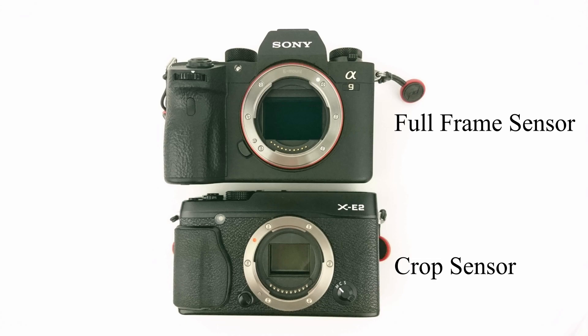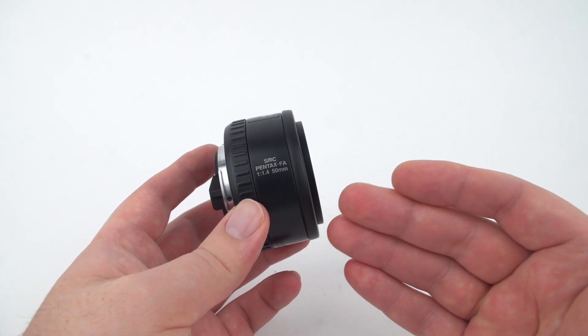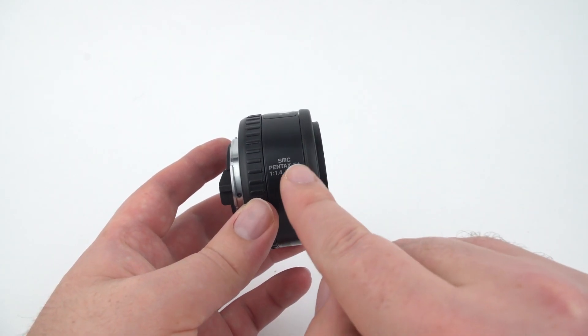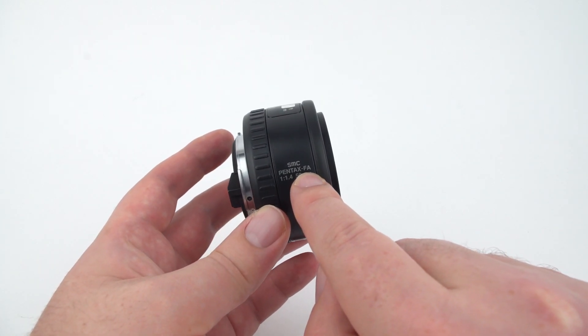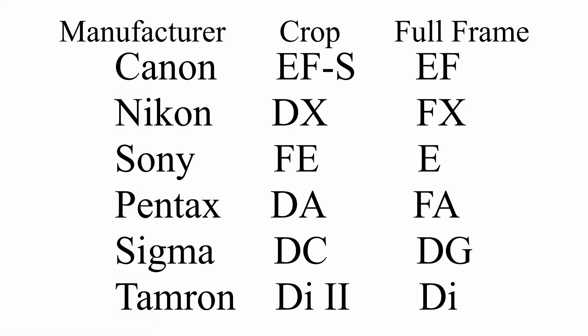Crop sensor cameras tend to be physically smaller and cost less because the sensor itself is smaller. Because of that smaller sensor, they can also make smaller lenses since the circle of light projected out the back doesn't have to cover a large sensor. Different manufacturers use different designations for crop versus full frame. For Pentax, FA means full frame and DA means crop sensor. For Nikon, DX means crop sensor, and FX means full frame — but they don't actually list FX on their lenses, so if it doesn't say DX, it's full frame.